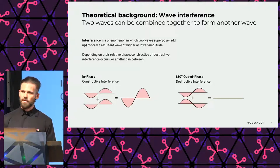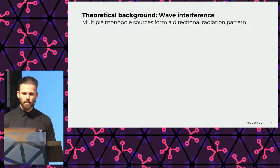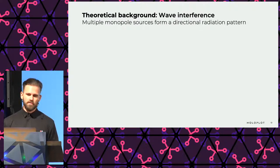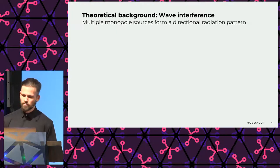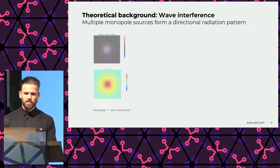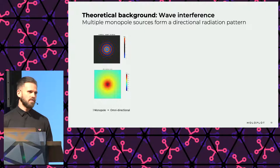Advanced loudspeaker arrays rely on the principle of controlled interference, based on the precise manipulation of phase between loudspeakers built in a line array. For interference to occur, speakers need to be placed close enough so their dispersion patterns overlap physically. A monopole source is a theoretical infinitely small sound source that radiates energy with equal level in all directions for all frequencies.